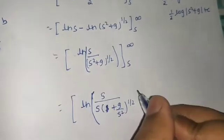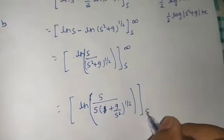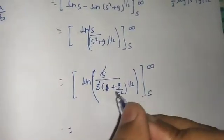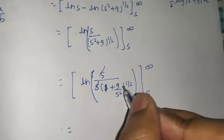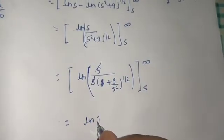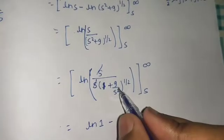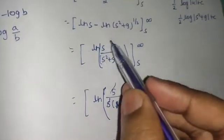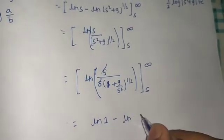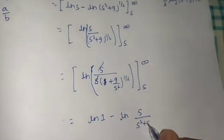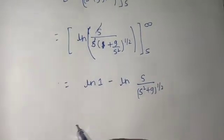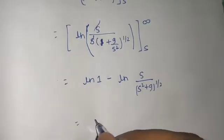We do this because we have infinity in one of the limits. Evaluating from s to infinity: at the upper limit, 9/infinity equals 0, so we get ln(1/1) which is ln(1), and ln(1) equals 0. At the lower limit, substituting s back in, we get ln of s divided by (s² plus 9)^(1/2).